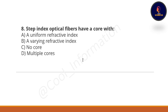Question 8: A step index optical fiber has a core with what? Option A: a uniform refractive index. Option B: a varying refractive index. Option C: no core. Option D: multiple cores. The correct option is A — a uniform refractive index. If you're feeling nervous, don't worry — go through all 60 questions across the three videos and you'll feel confident in your exam.